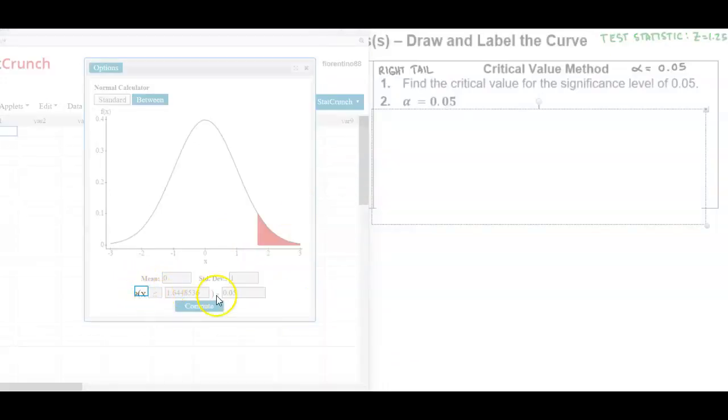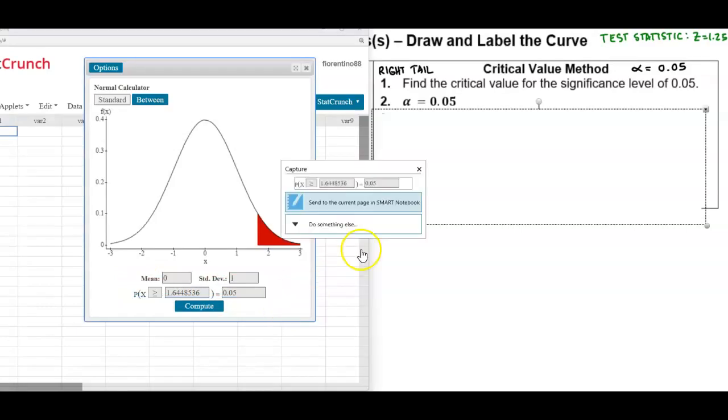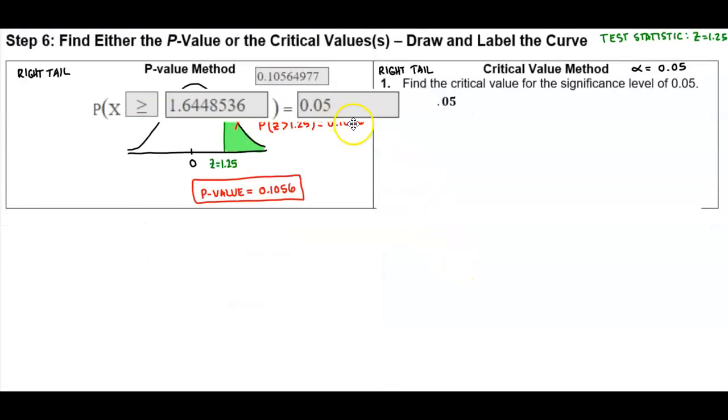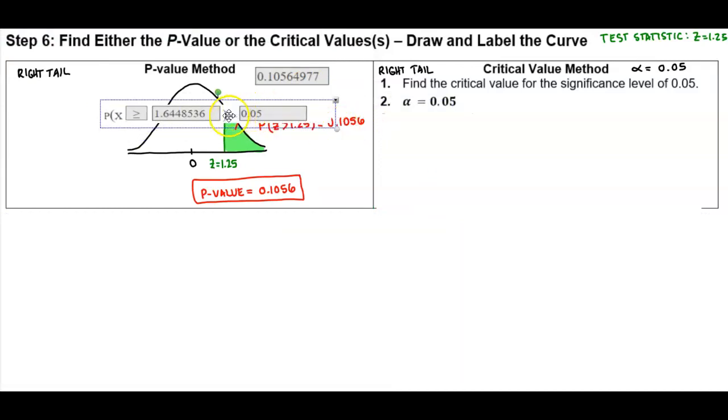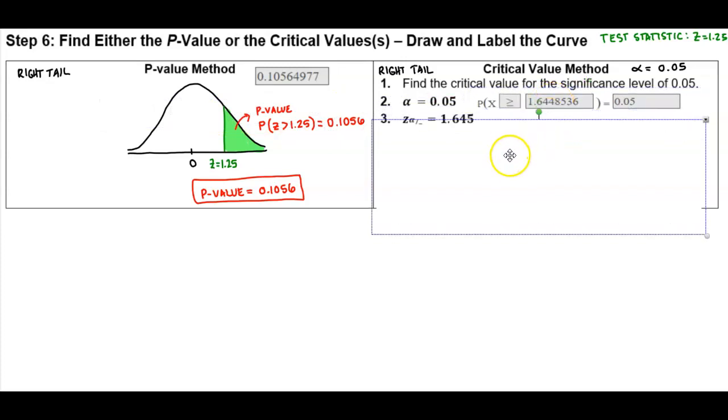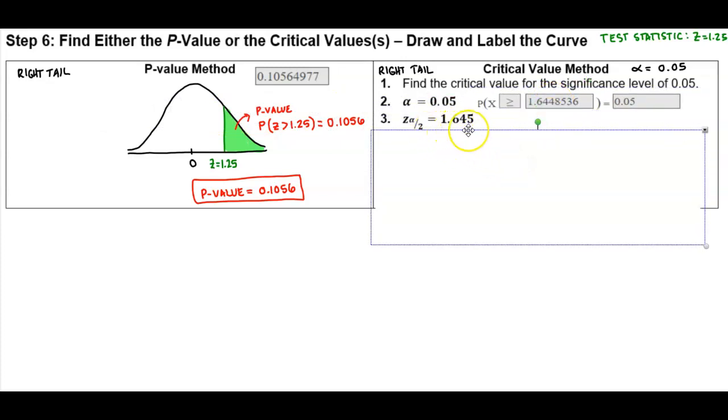So the critical value here, let me go ahead and copy that, is the following. So using that area of 0.05 we're going to round that to 3 decimal places so we end up getting the critical value of 1.645.